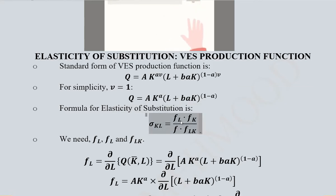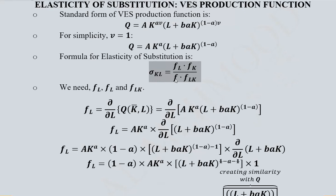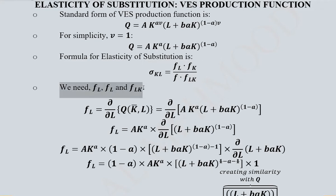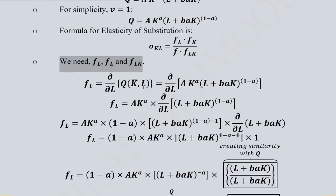We know the general formula for the elasticity of substitution, which is equal to this expression. To apply it, we need to calculate three terms: FL, which is the derivative of the production function with respect to labor; FK, the derivative with respect to capital; and FLK, the cross partial derivative of FL with respect to capital.